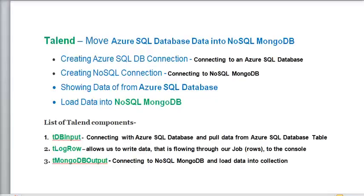Welcome, in Talend Open Studio we are going to learn how to move your Azure SQL database table data into a NoSQL database like MongoDB using Talend Open Studio. First, we are going to create an Azure SQL database connection to connect Talend to Azure SQL. Second, we are going to create a connection to connect with MongoDB in Talend. Then we will pull data from Azure, display it in Talend, and store it into NoSQL MongoDB.